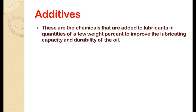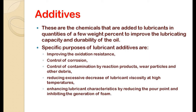Now we move on to additives. We have seen the types of lubricants and their individual properties, but sometimes finding the correct lubricant suitable for operating conditions can be a tough job. Operating conditions include speed of moving parts, load, temperature of the system, and material of moving surfaces. To make an existing lubricant suitable for these conditions, certain chemicals are externally added to the lubricant in specific quantities. This addition helps to improve the lubricating capacity, durability, and overall properties of the lubricant so it becomes suitable for the system requirements.